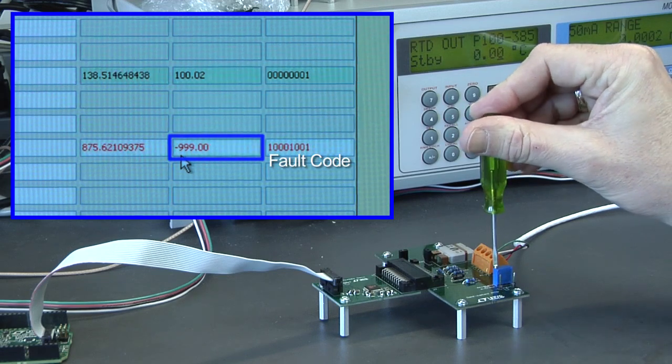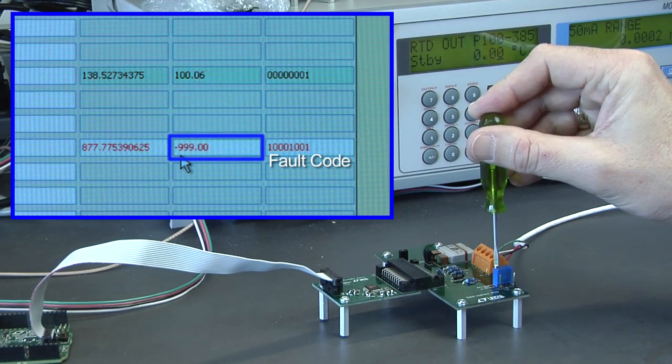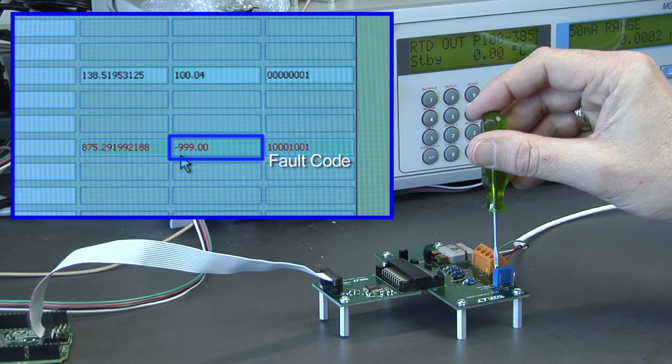Soft faults report the calculated temperature, while hard faults report minus 999 degrees, indicating an invalid reading.